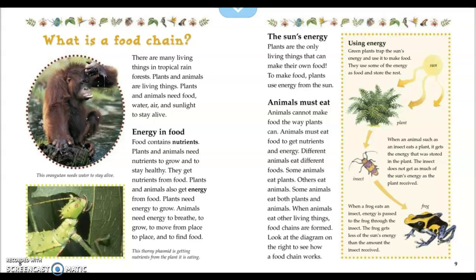Plants are the only living things that can make their own food. To make food, plants use energy from the sun. Animals cannot make food the way plants can. Animals must eat food to get nutrients and energy. Different animals eat different foods — some animals eat plants, others eat animals, and some eat both. When animals eat other living things, food chains are formed.